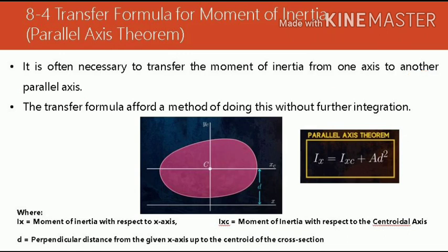In the diagram, if you notice, there's a centroidal axis, denoted by x sub c and y sub c. Now, the required moment of inertia is the given x axis. So considering the distance, to get Ix, it equals Ix sub c, or the moment of inertia of the centroidal x axis, plus the area multiplied by the distance d squared. The transfer formula provides a method of doing this without further integration. That ends the PowerPoint.